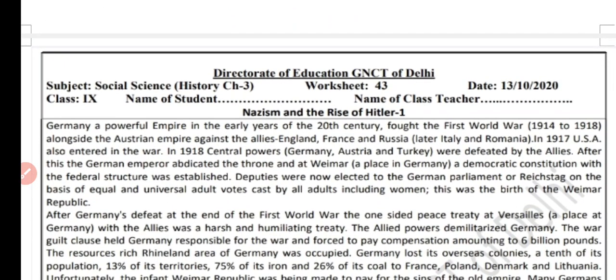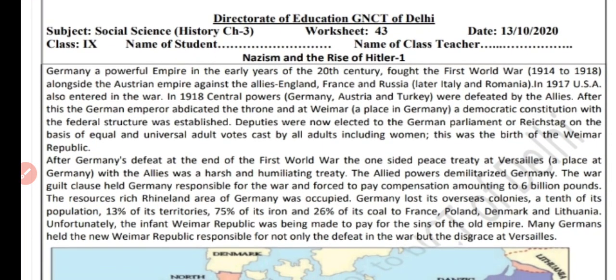As it is visible on your screen, this is worksheet number 43. Our subject is SST — Social Science — and in Social Science, History, Chapter number 3: Nazism and the Rise of Hitler. Date: 13th of October 2020.